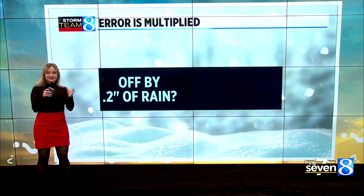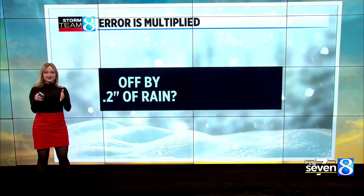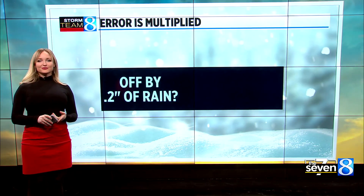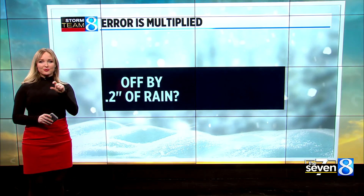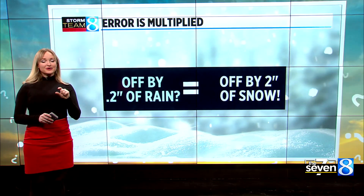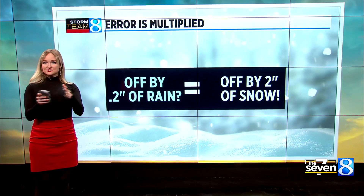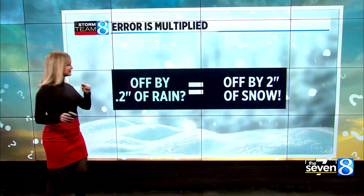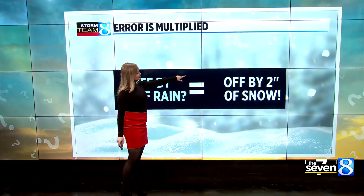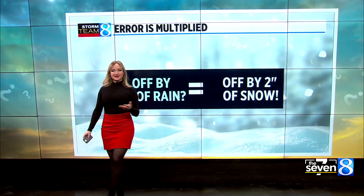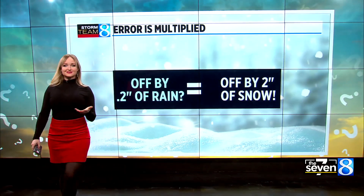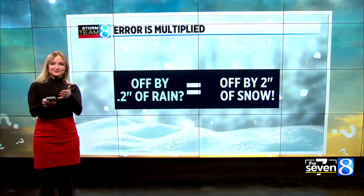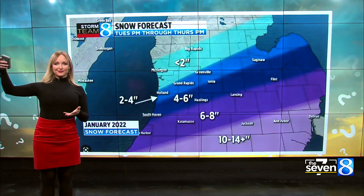Tiny shifts in the forecast track could mean big changes in how much snow you see. Usually it's only our farmers that mind that much if they're shorted by 0.2 inches of rain. But we hear a lot more feedback when a storm system shifts by a small amount and that 0.2 inches of liquid precipitation ends up cutting them down by about two inches of snow. So if your snow forecast was for four inches and instead you got two, sometimes you feel like you were shorted — it's just because the precipitation really compounds the error.